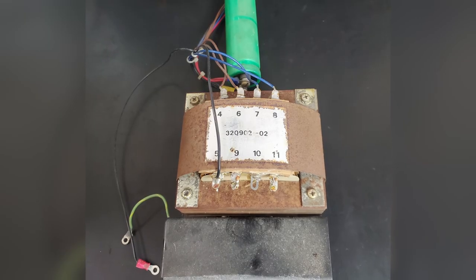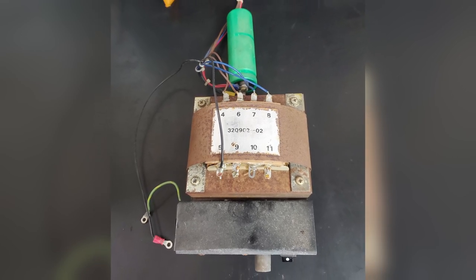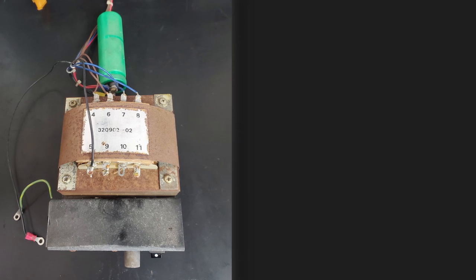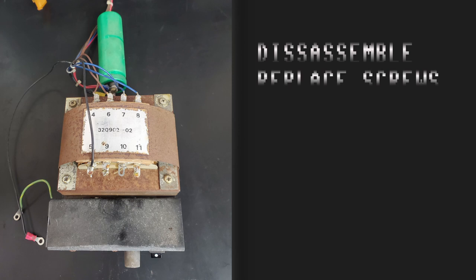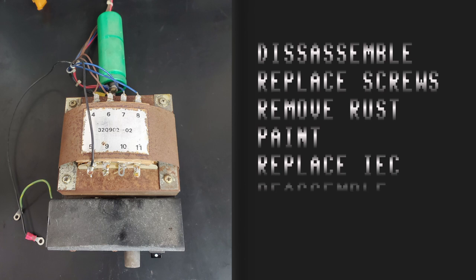You wouldn't think that this power supply would take much to restore, but as I broke things down, I realized there's a lot to do. I want to do a high quality restoration, so it's going to need to be disassembled and have the rusty fasteners replaced, have all the rust removed, the frame and band are going to need painting, the IEC connector will have to be replaced because it has integrated RIFA capacitors. Finally, it'll all have to go back together and get tested.